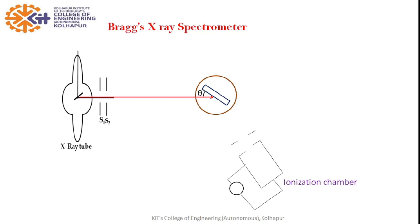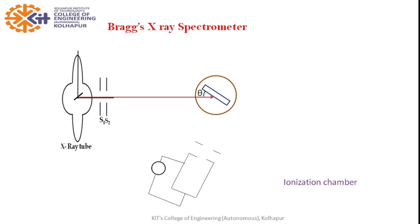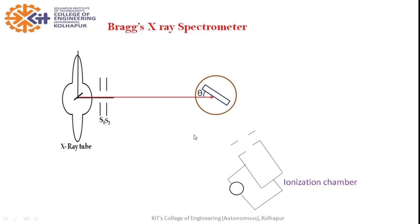We use an ionization chamber as the detector. When X-rays are incident in — or passed through — the ionization chamber, the X-rays produce ionization and give a current that we call ionization current. The diffracted X-rays are passed through the ionization chamber, they produce ionization, and we record the resulting current. The current produced in the ionization chamber is directly proportional to the intensity of X-rays, so this current value gives us the intensity of the diffracted X-ray beam.